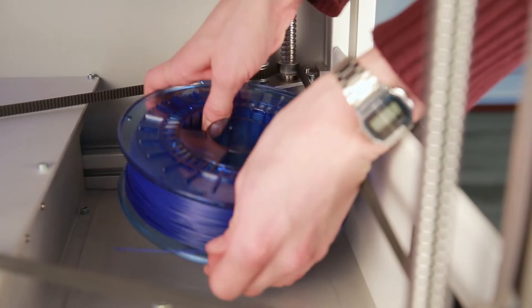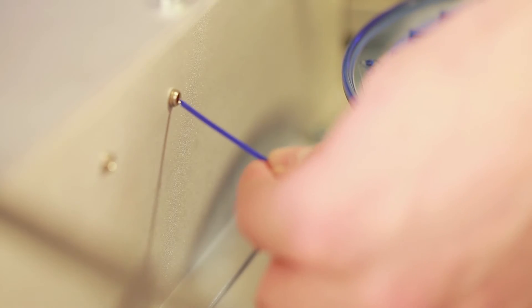Cut the filament wire into a sharp point with a cutting tool. Straighten the end of the filament wire using your thumb and index finger. Place the filament spool into the printer and insert the filament into the guide.